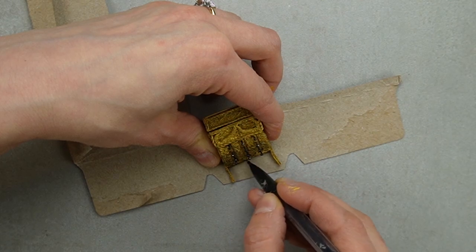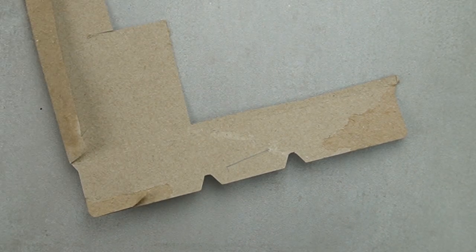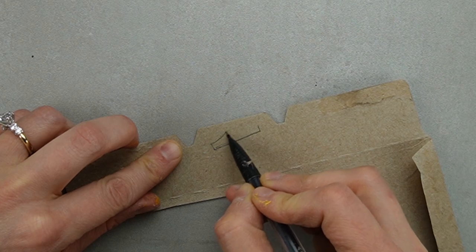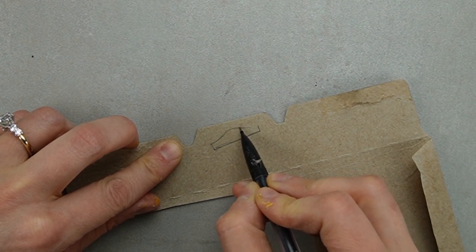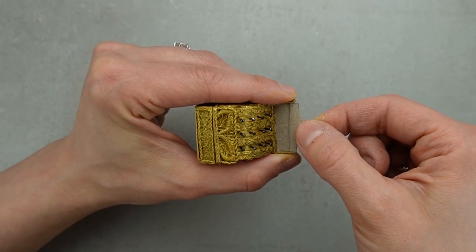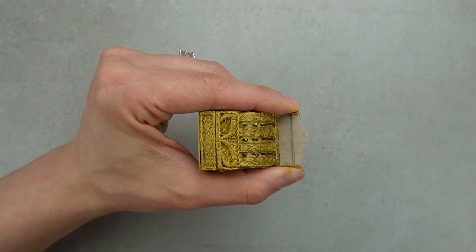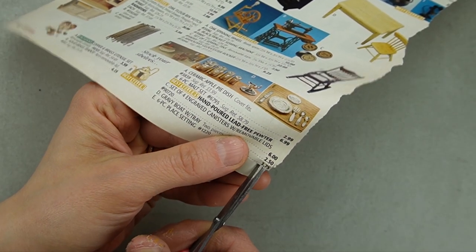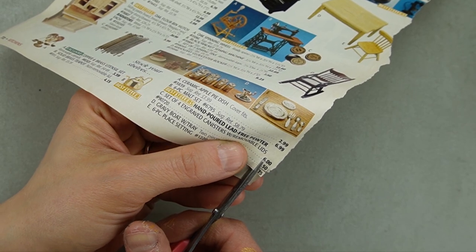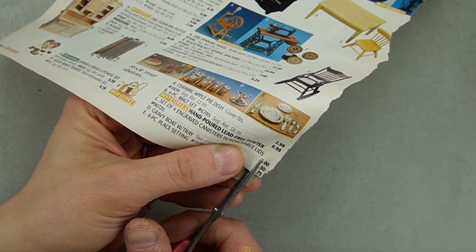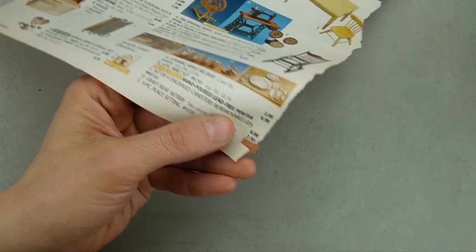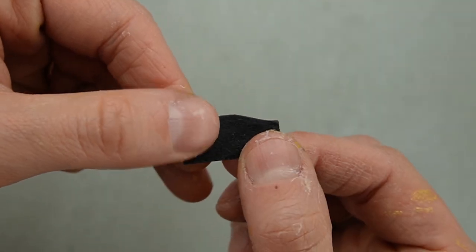To make the window that displays the price, I traced a couple shapes onto some more cereal box. There are two pieces layered on top of one another. To make it look like there's a price being displayed on the window, I cut out a graphic from a magazine and glued it to a piece of cereal box painted black.